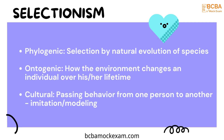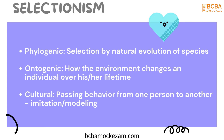The second assumption is selectionism, which conveys the idea that there are three ways that the environment acts upon a living being: phylogenic, which is selection by natural evolution of species; ontogenic, which is how the environment changes an individual over his or her lifetime; and cultural, which is passing behavior from one person to another, also called imitation or modeling.